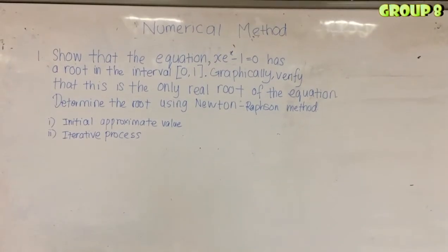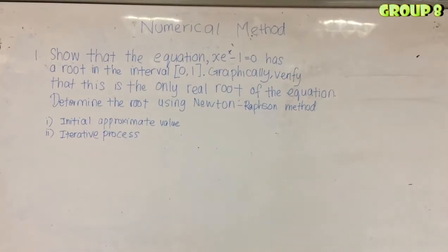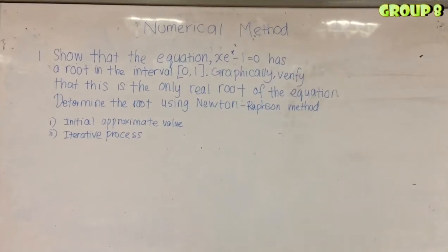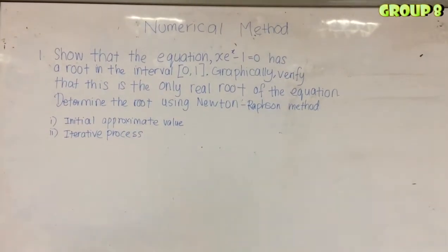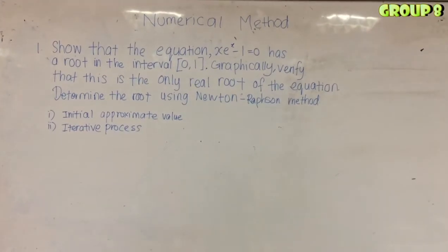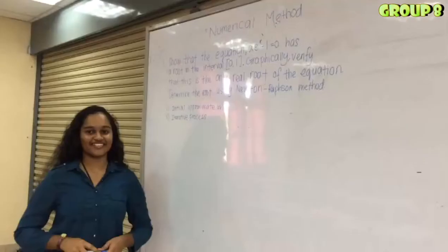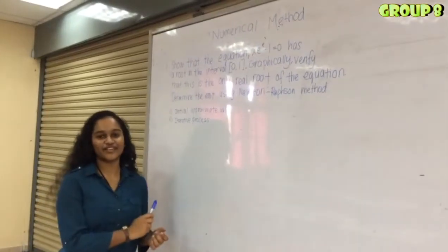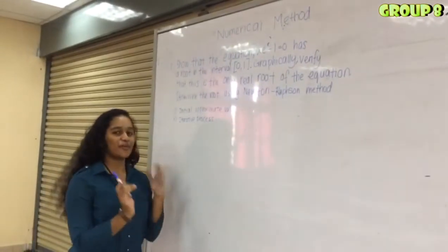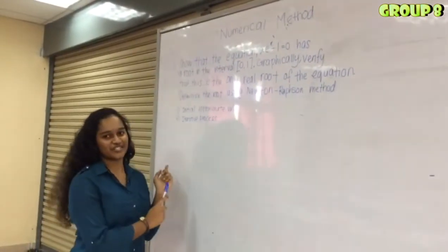The equation xe to the power of x minus 1 equals 0 has a root in the interval 0 to 1. Graphically verify that this is the only real root of the equation, then determine the root using the Newton-Raphson method. I believe you all understood the question, so let's see how my friend answers it.